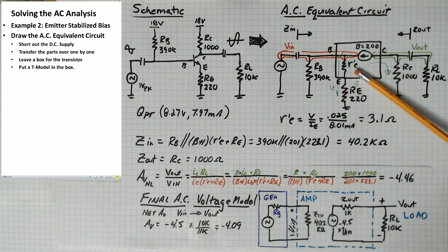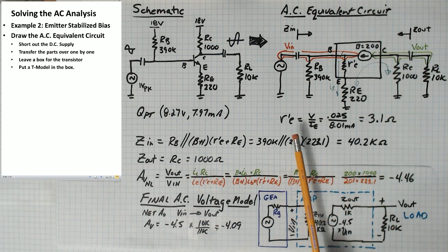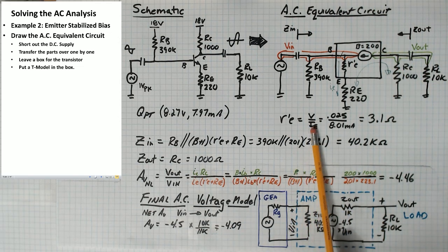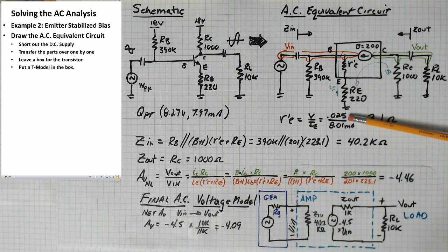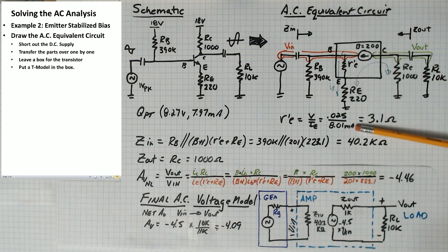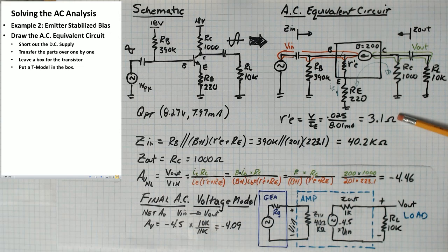And then there's also R prime E. R prime E, as we discussed before, that's a voltage over a current. The voltage comes from Boltzmann's constant. And the current comes from the DC emitter current, which was 8.01 milliamps. So R prime E is approximately 3.1 ohms.